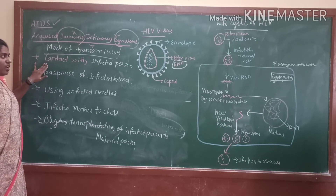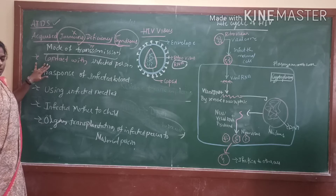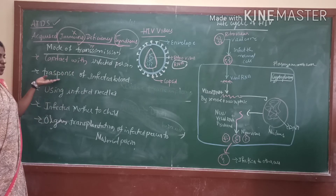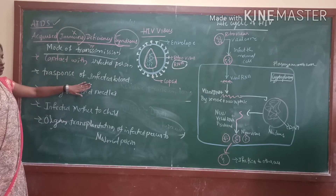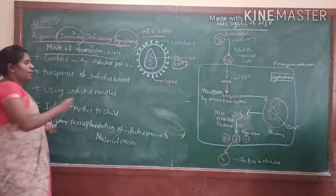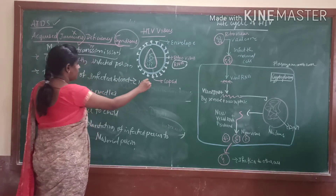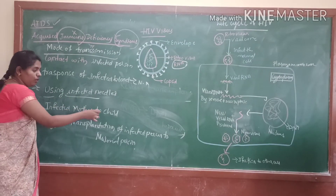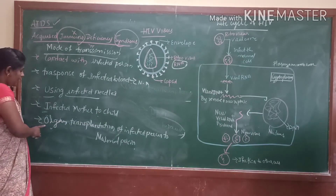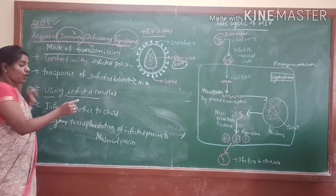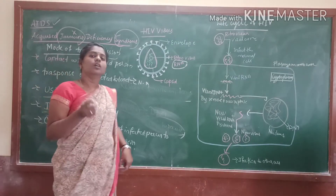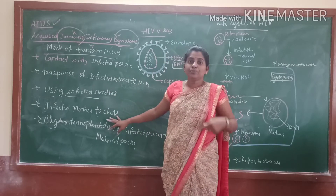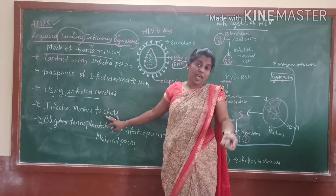Contact with infected person means contact through sex. Contact with infected person and transfusion or transplantation of blood — infected blood to a normal healthy person. Next, using of infected needles, and infected mother to child or fetus. And organ transplantation of infected person to healthy person. These are the modes of transmission — how the HIV can be transferred or HIV can infect.